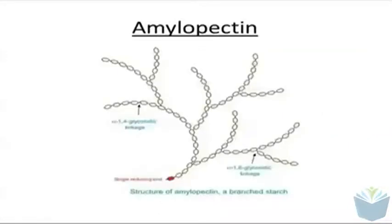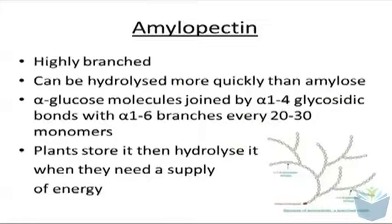This is a diagram of amylopectin and you can see there are a number of alpha 1,4 glycosidic bonds and also alpha 1,6 glycosidic bonds. The 1,6 glycosidic bonds give it a much more branched structure, and the fact that it is more branched means you can quickly cleave off one of the glucoses so it can be used in respiration quickly. Amylopectin is hugely branched and you can hydrolyze it much more quickly.